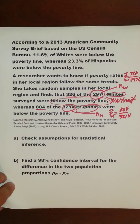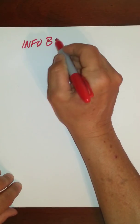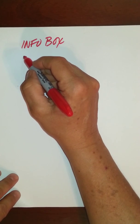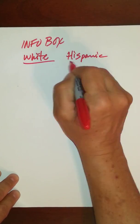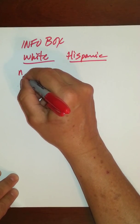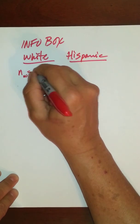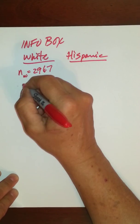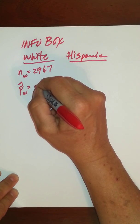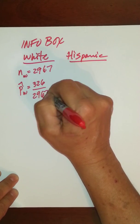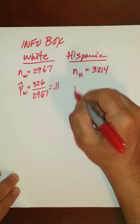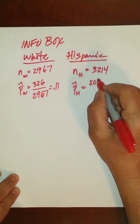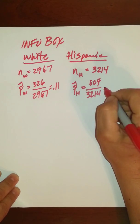Let's go ahead and start setting up our info box. For organization, you might want to label it whites vs. Hispanics. The sample size for the whites is 2,967, and the sample proportion for whites was 326 over 2,967, which is 11%. For the Hispanics, the sample size was 3,214, and the sample proportion was 804 over 3,214, which came out to be 25%.